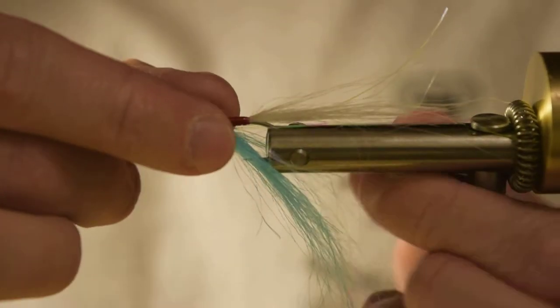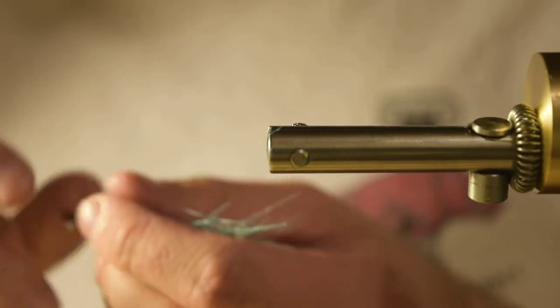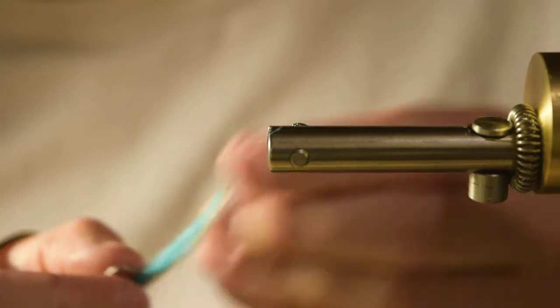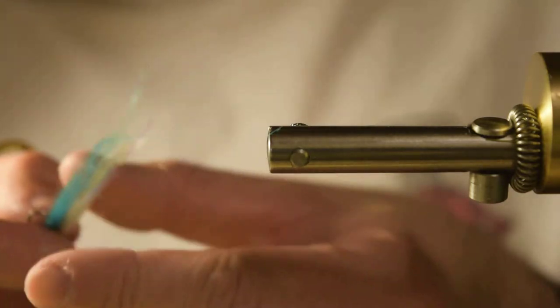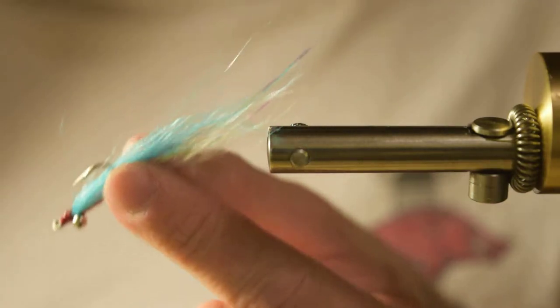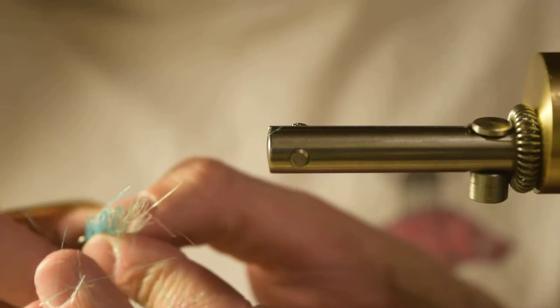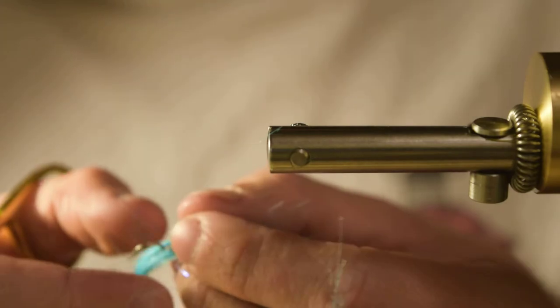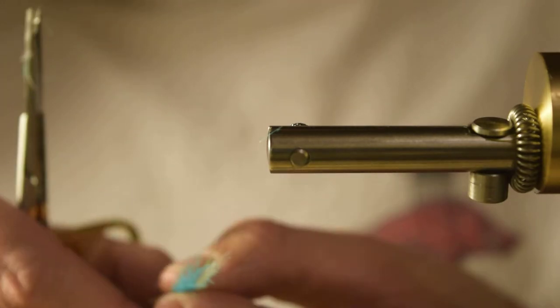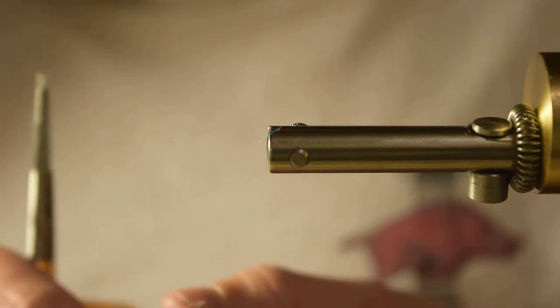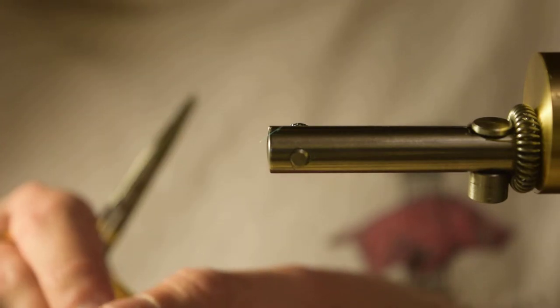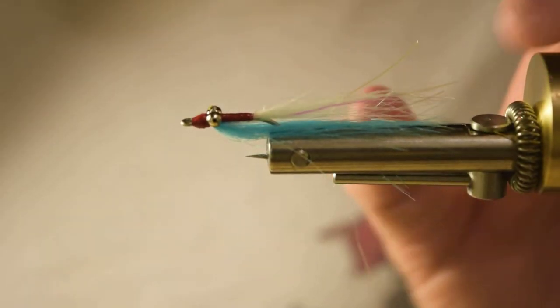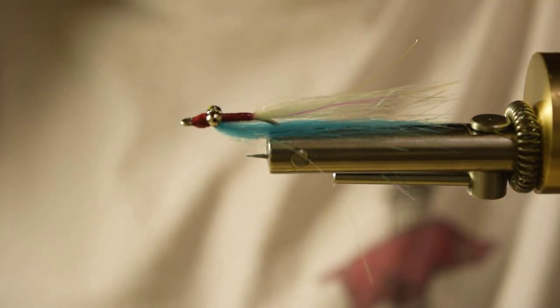Now we're ready to trim it. You can use any really hook on this. You can use any streamer hook you want. But for white bass, I try to keep it within about two and a half inches. So I'm just going to come in and cut it at an angle, just so it kind of tapers. You can see it's probably about two and a half times, three times the length of the hook. This is a pretty short shanked hook though. And that's really all there is to tying a Clouser. Hope you guys like it. Thanks.